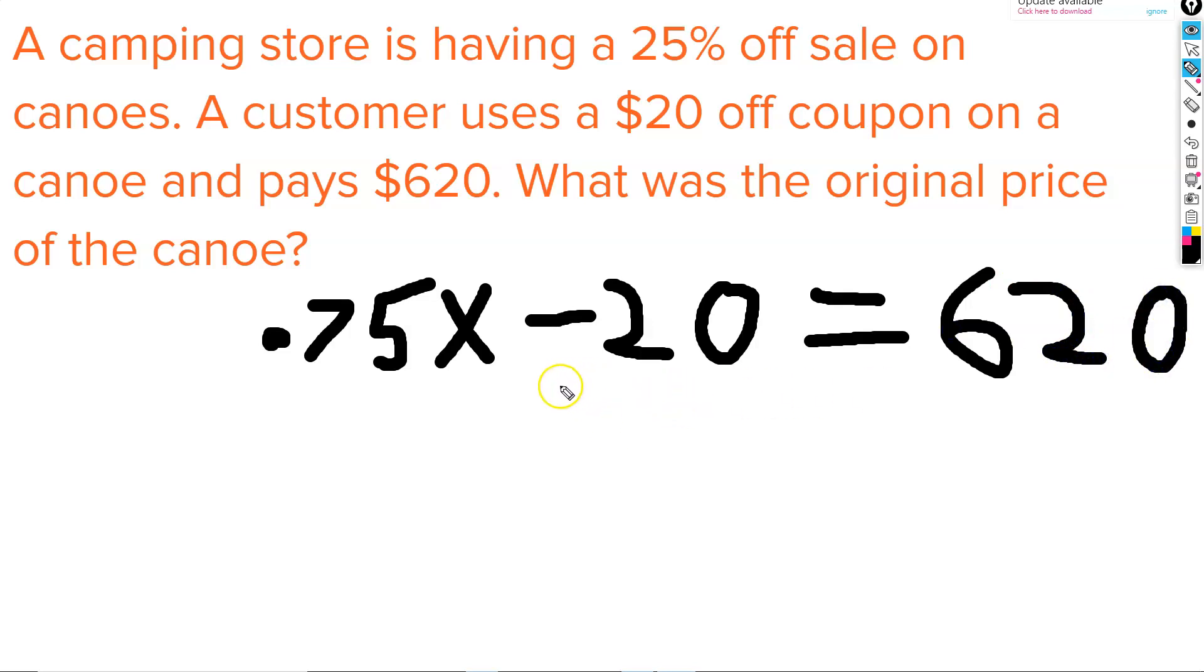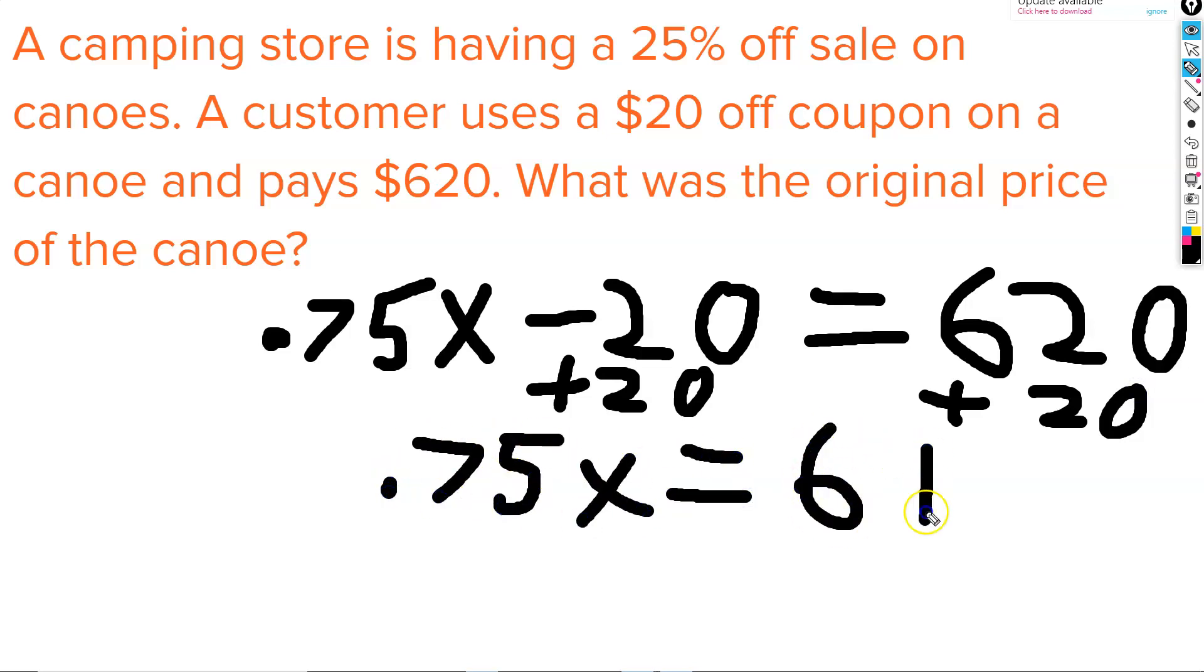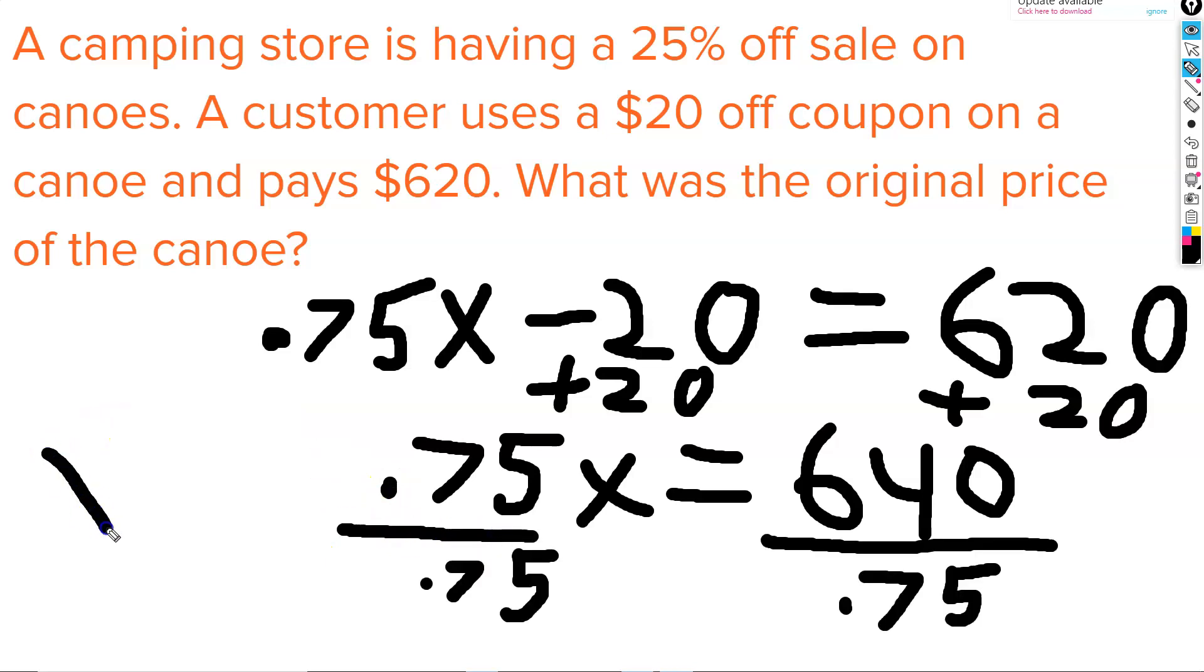To solve this equation, we'll start by adding 20 to both sides. This gets us 75% of x equals $640. And our last step will be to divide both sides by 75%. This gets us an x value of $800. Our x value of $800 tells us that the original price of the canoe was $800.